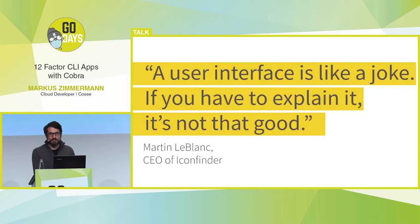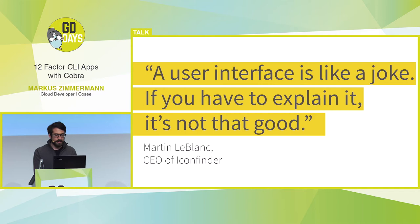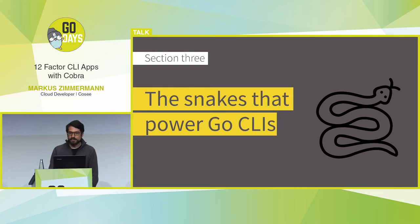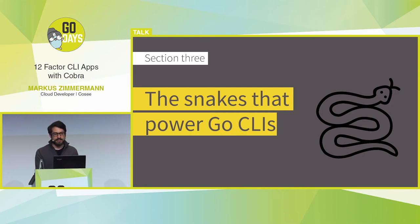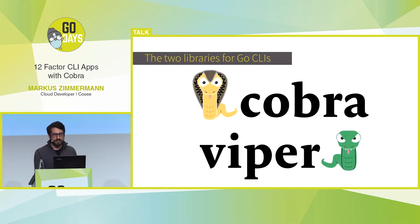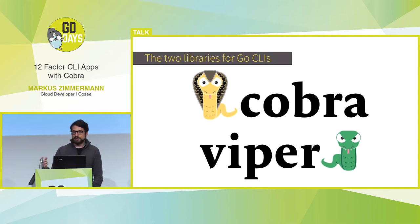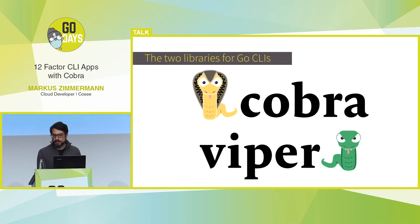Another big example is using Vim, but I'm not going to start that discussion. This all comes down to the quote: 'A user interface is like a joke — if you have to explain it, it's not that good,' from Martin LeBlanc on Twitter. With that I want to jump to Go: what are the libraries that power nearly all CLIs written in Go? It's basically Cobra and Viper. Cobra is the CLI library and Viper is a configuration library.